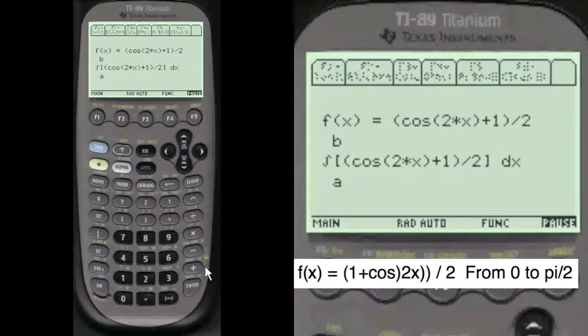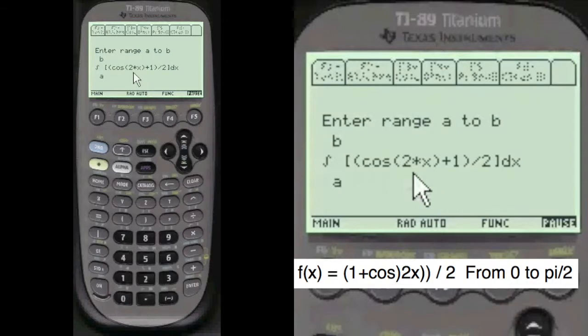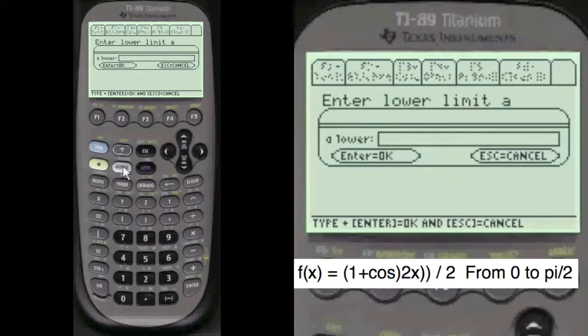I always show you what you've entered. You can change it if you want. I say it's okay. Now we're going to enter the range. The lower limit was alpha 0.